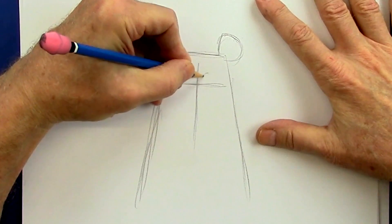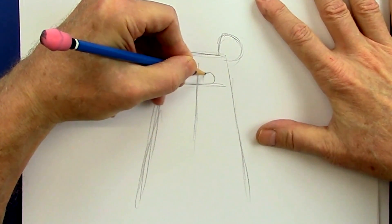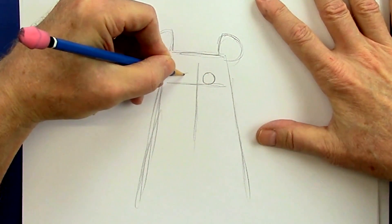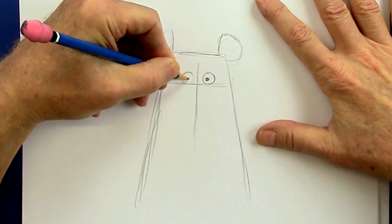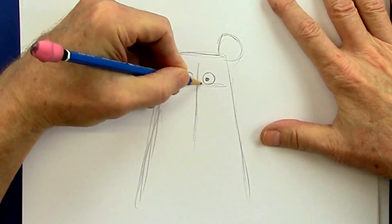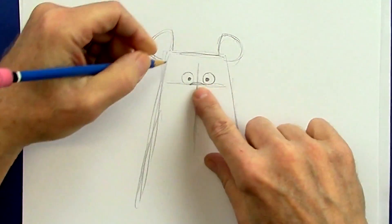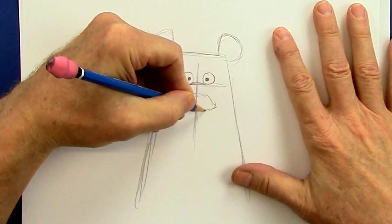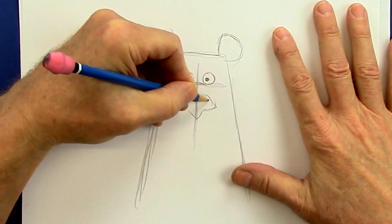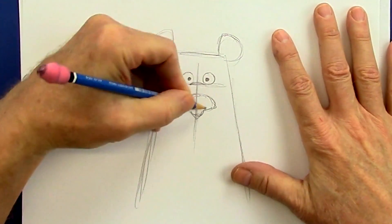So let us put two small, sort of beady eyes close to each other right here. Here is the bridge of the nose. Let's give him a funny looking nose like this.